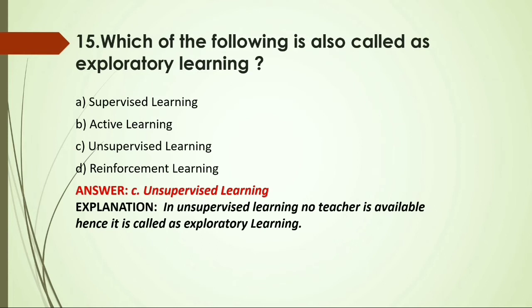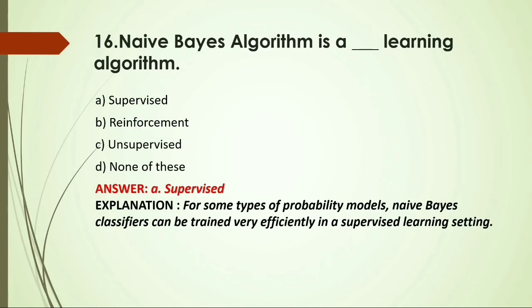MCQ: Naive Bayes-based algorithm is a — A) Supervised learning algorithm; B) Reinforcement learning algorithm; C) Unsupervised learning algorithm; D) None of the above. Answer: A, supervised, because for some types of probability models, a Naive Bayes classifier can be trained very efficiently in supervised learning settings.